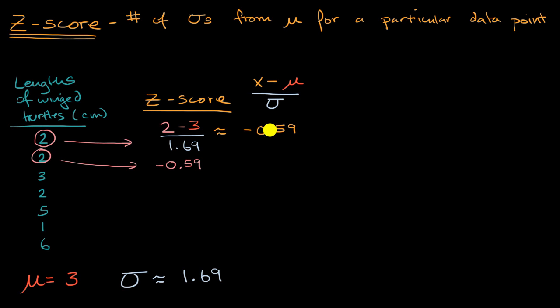One way to interpret this is, this is a little bit more than half a standard deviation below the mean. And we could do a similar calculation for data points that are above the mean. Let's say this data point right over here. What is its z-score? Pause this video and see if you can figure that out.